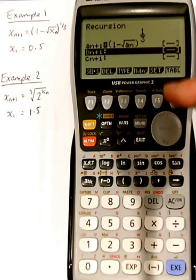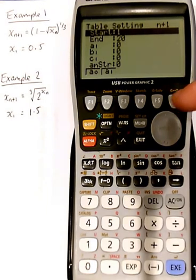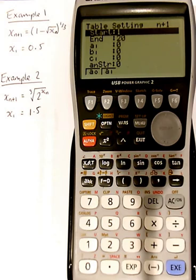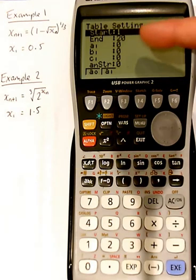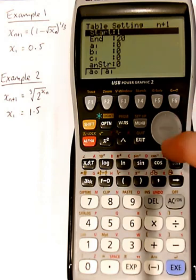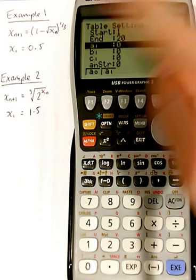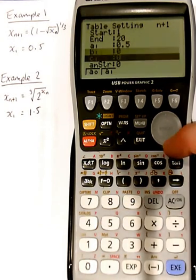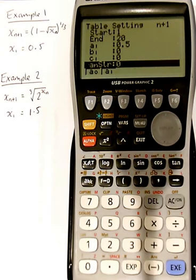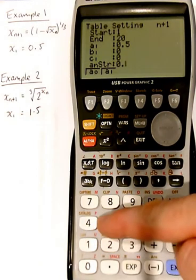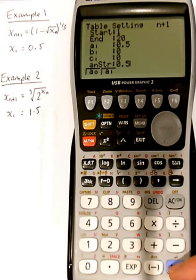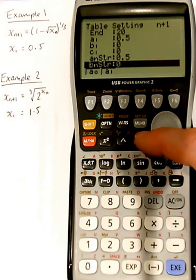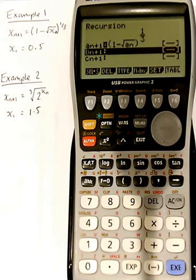We now need to put in our starting value, so we use set. This start and end is just for the counter for n, so we're going to start with x1, then x2, then x3, and so on, up to x20. So if we scroll down to a1, that's our starting value, so we want 0.5 here. Now further down, we've got an.str, and we want to use this string value as our starting value when we're drawing our graph. So I'm putting in 0.5 and pressing execute, and now exit will take us back to our form.